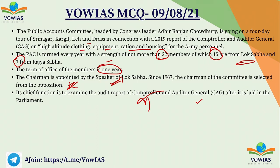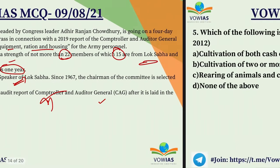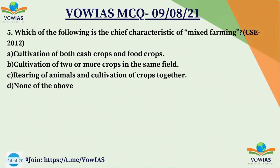The Public Accounts Committee is a committee of accountability — it asks questions to the government because the CAG report generally audits everything the government does, and this committee examines that CAG report.